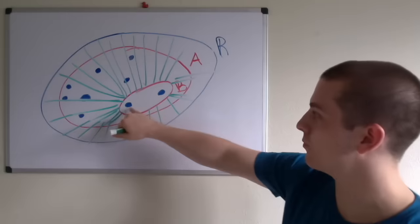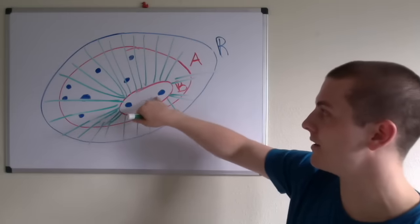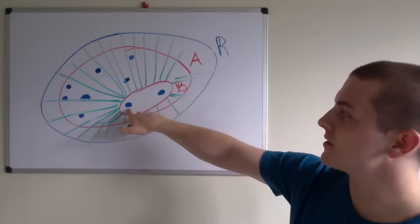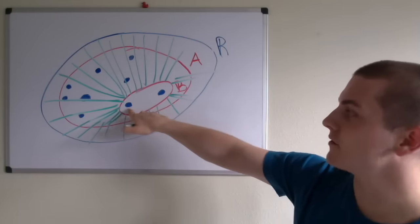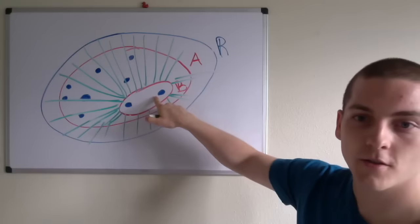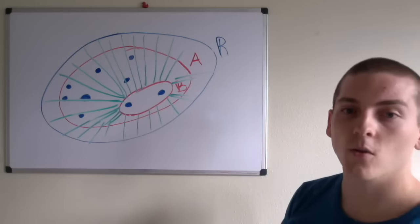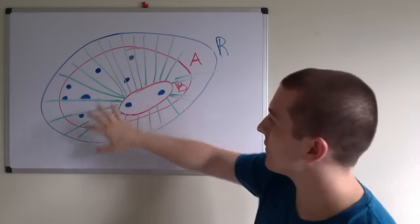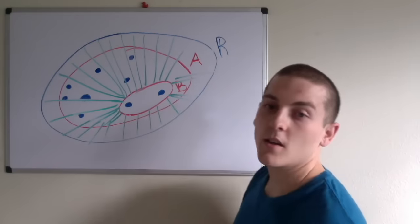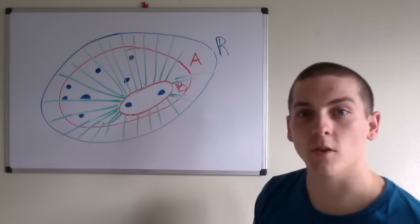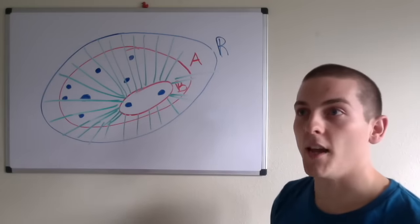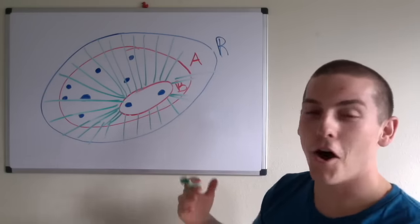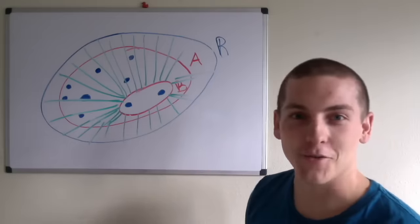So if this is the rational numbers and these are the integers, then everything outside of this would be the irrational numbers and the non-integer values.